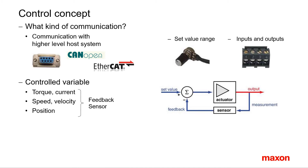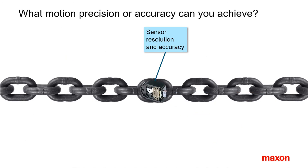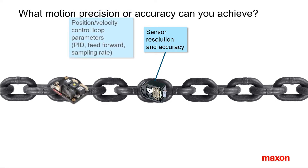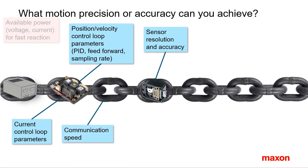Set values could also simply be given as a digital or analog signal. Do we need additional inputs and outputs — for example, for homing or temperature monitoring? Additionally, the range and needed accuracy of the controlled parameter has to be defined. Again, the weakest link in the drive chain and the combination of all factors defines the quality of motion. Typically one might say it's the sensor resolution and accuracy that gives perfect control, but this is just one element. A lot depends on the design of the control loops, on communication between components, and on the available power for a fast reaction.